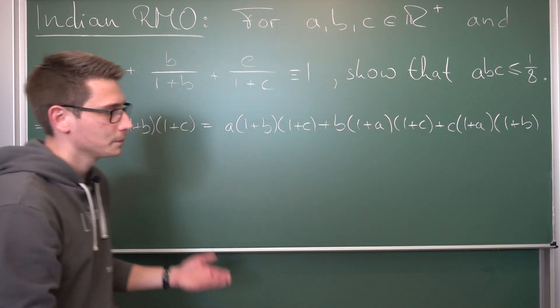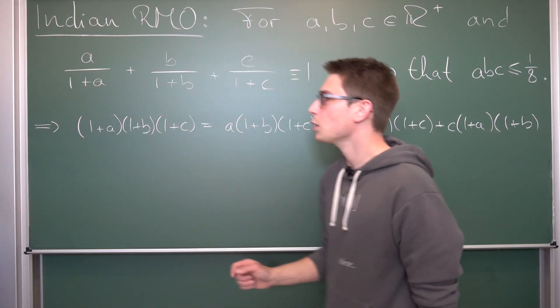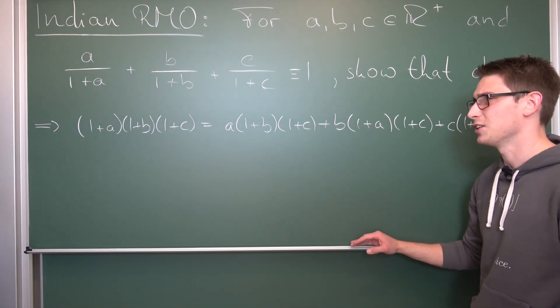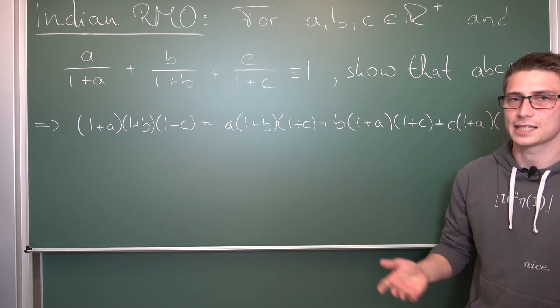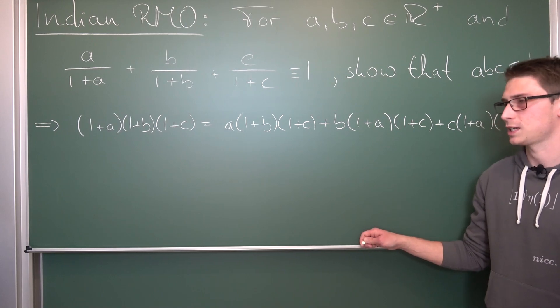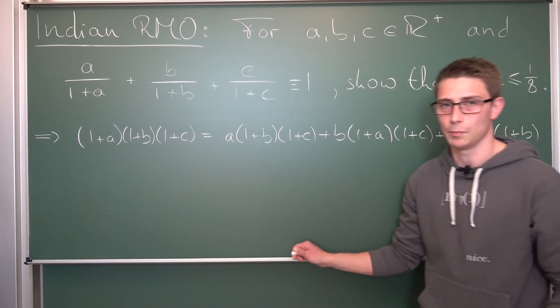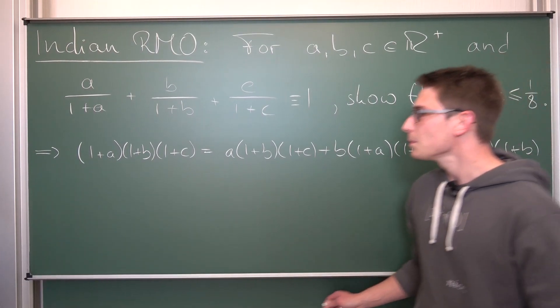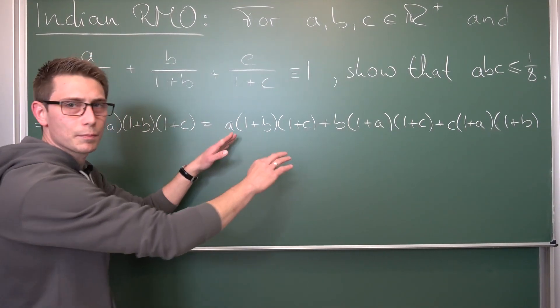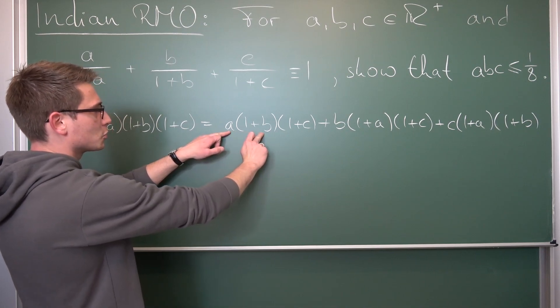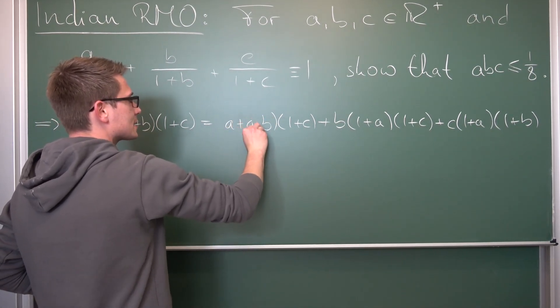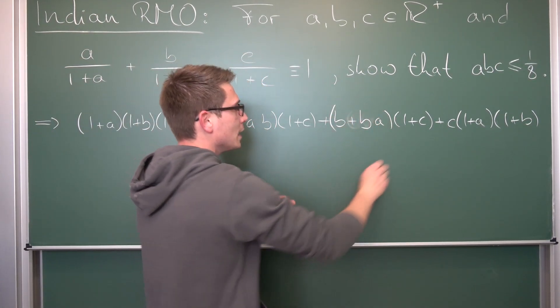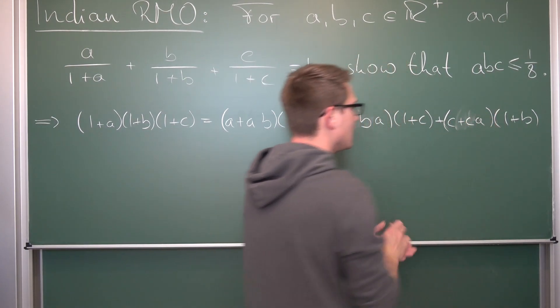And we are already on the right track right here. Because what we can do now is we can just multiply everything out and see if we can just cancel out some summands on both sides. We are going to get a bunch of abc's. So at first, if I just multiply a bit of stuff together, multiplying the a into here gives us (a+ab) times the rest. Same thing here, (b+ba). And here we get (c+ca).